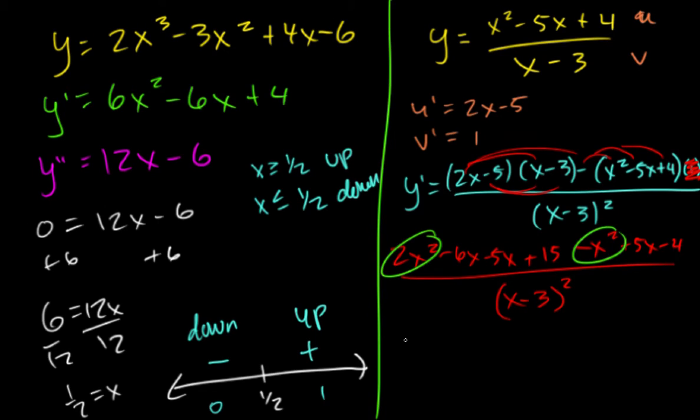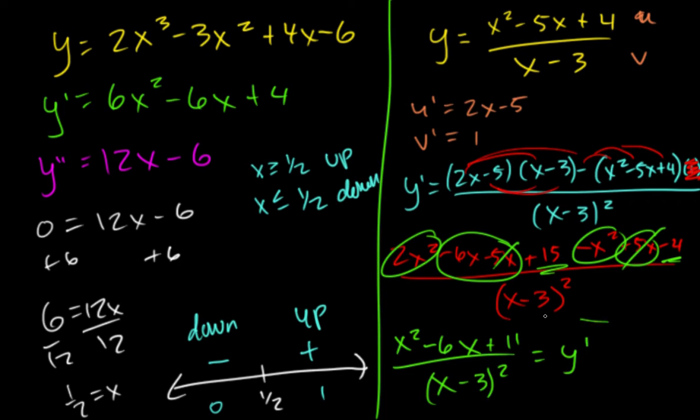And then we'll distribute here 2x squared minus 6x minus 5x plus 15. So if we combine these, we just get x squared. Those cancel. We just get negative 6x. And then this and this are going to be positive 11. That's the first derivative.